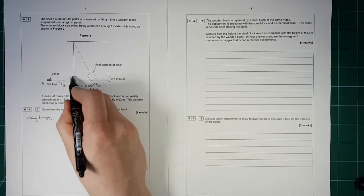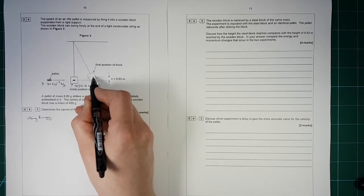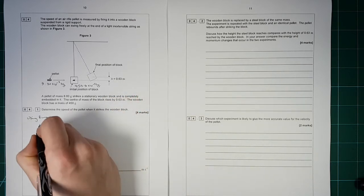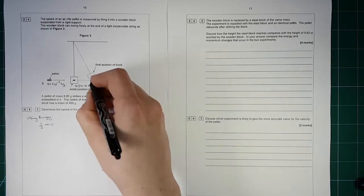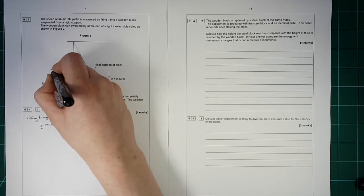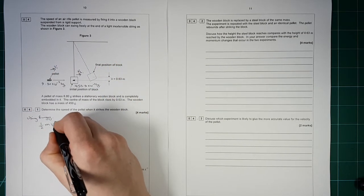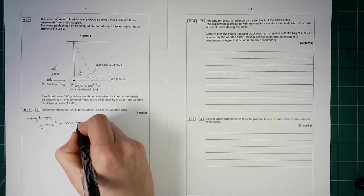So as it strikes, this has got some kinetic energy. It shoots up here. All that kinetic energy is converted into gravitational potential energy. And the height difference there is how much it's got. So a half mv, I'm going to call this as it shoots off here, v2. And I'm going to call the pellet speed v1. So a half v2 squared is equal to mg delta h.